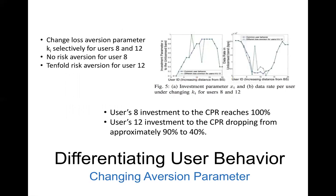Another aspect is changing the loss aversion parameter k_i. This experiment considers users 8 and 12, who have decided to change their loss aversion parameter — one will be taking more risk and another less risk. User 8 has no risk aversion, with investment jumping from 0.6 to 0.1, while for user 12, risk aversion has been increased tenfold and investment dropped from 0.9 to 0.4.